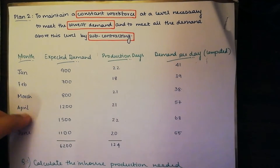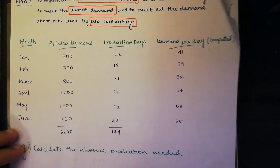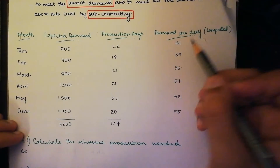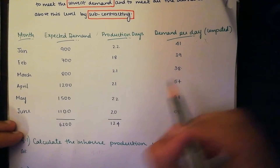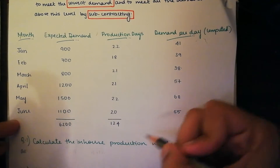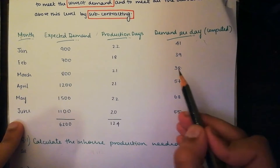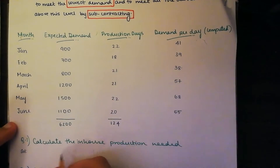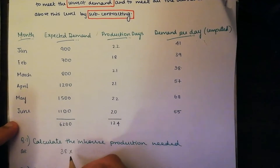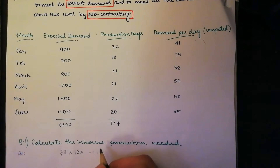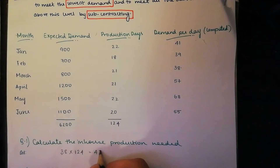We need to find the lowest demand, which will be produced within the company. Our first question is to calculate the in-house production needed. Looking at the demand per day for each month, we can see that in the month of March we have the lowest demand of 38. So we take that 38 and multiply by the total production days, 124, which gives us 4,712.